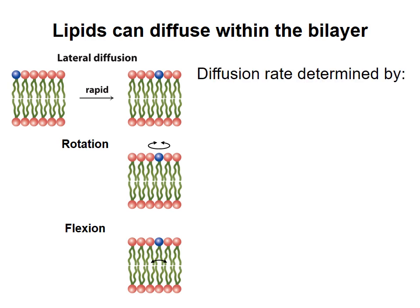Several factors influence the diffusion rate of lipids in a bilayer. First, the higher the temperature, the faster the diffusion.